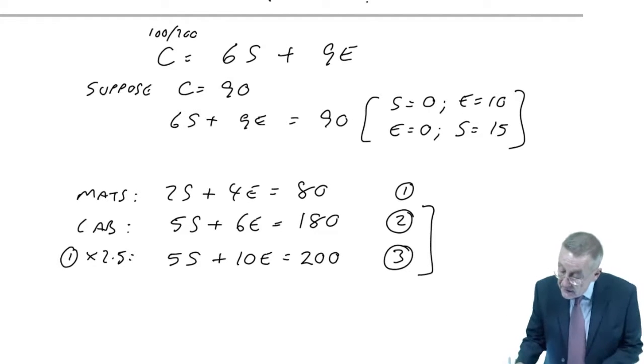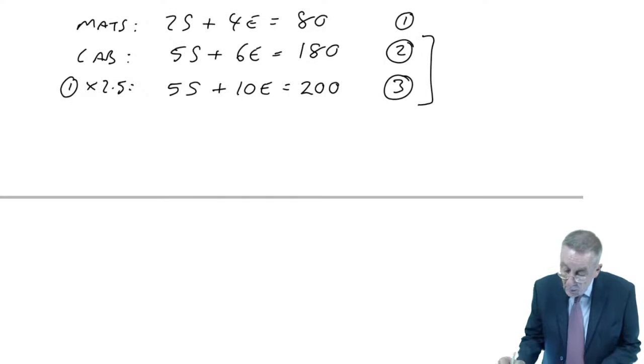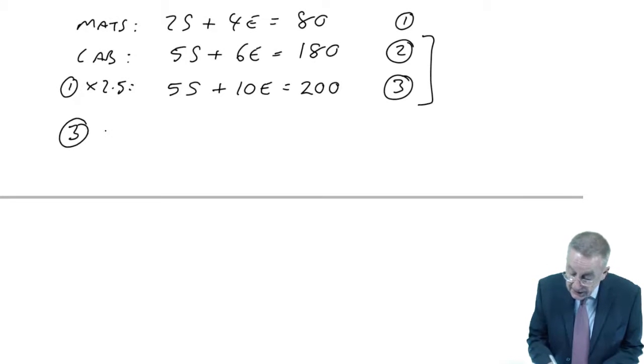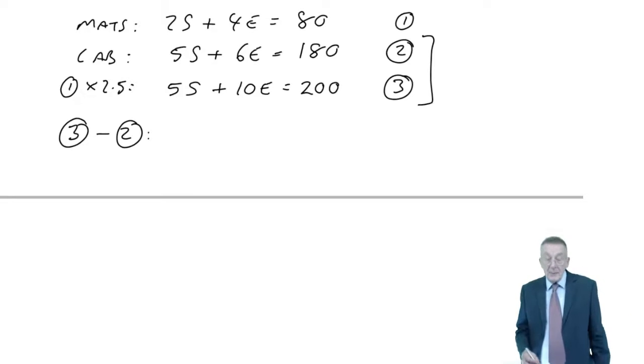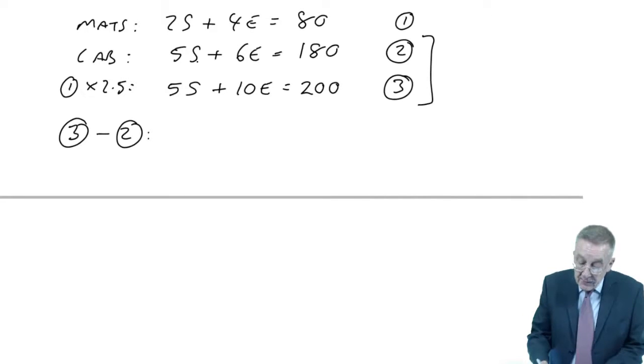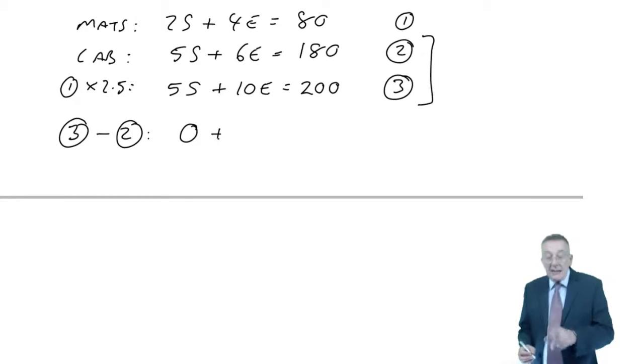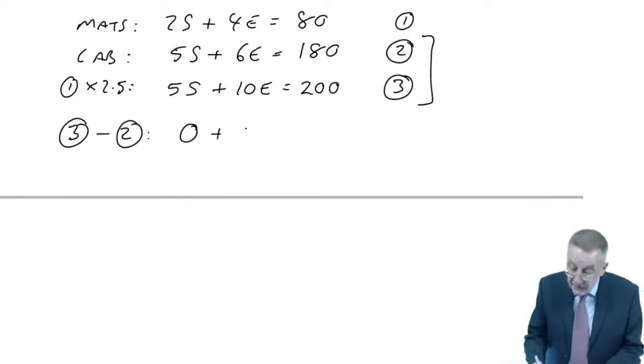But if I multiply the first equation, if I multiply everything by 2.5, 2.5 times 2S is 5S. 2.5 times 4E is 10E. 2.5 times 80 is 200.